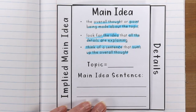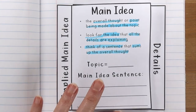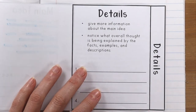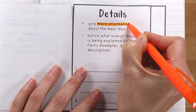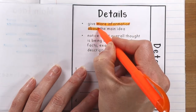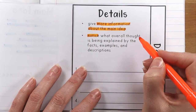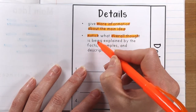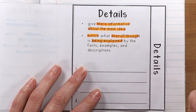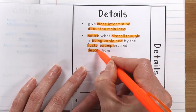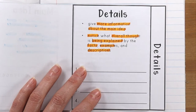It sounds a little challenging, but that's okay. I'm going to give you some great steps and we're going to figure out exactly how to do that. We're going to talk about details and then figure out the topic, read the passage, and come up with all of these answers together. Details are giving us more information about the main idea. We've got to look and observe what the overall thought is that's being explained, and we're going to find this in the facts, examples, and descriptions that the author is giving us.